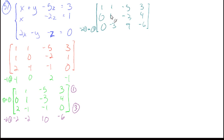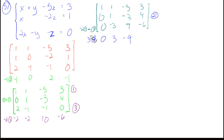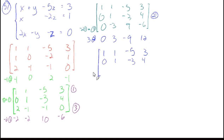Row 2 has a 1 in its leading position, so we'll use it to eliminate the entry in row 3, column 2. Multiply row 2 by 3: 0, 3, negative 9, 6. Adding to row 3: 0, 3 minus 3 is 0, 9 plus negative 9 is 0, and 6 plus negative 6 is 0. So new row 3 is 0, 0, 0, 0.